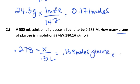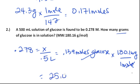which, if you multiply by molecular weight, grams over 1 mole, moles cancel, that gives you 25.0 grams of glucose.